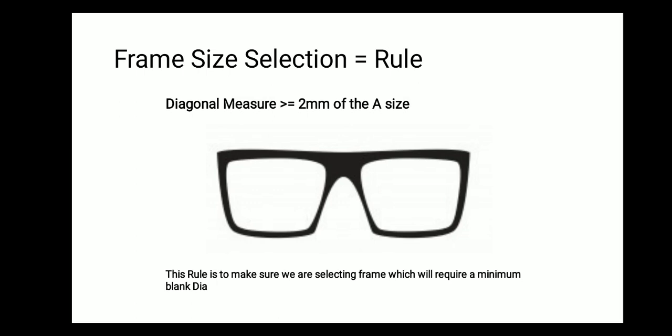These are the three important aspects that one should always keep in mind when suggesting a frame in order to control spectacle lens thickness. Let us quickly get into frame size. There is one rule you should all remember: the diagonal measure should not be greater than or equal to 2 mm of the A size. The diagonal measure is the diagonal of the frame, and the A size is the horizontal width. This rule ensures we select a frame that requires the minimum blank diameter of the lens.